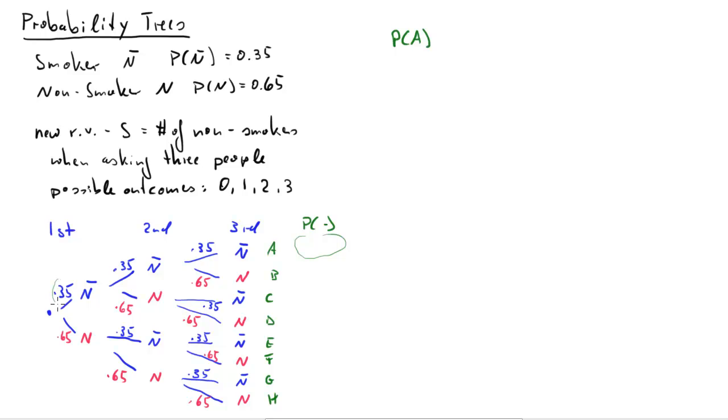So here, that was here, 35%. Then picking the second smoker and the third smoker was always 35%. So the probability for outcome A turns out is 35% times 35% times 35%.